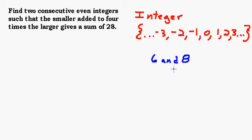Those are two consecutive even integers because they're in a row, they're even, and they're integers. Twelve and seventeen would not be two consecutive even integers because they're not consecutive and seventeen is not even.